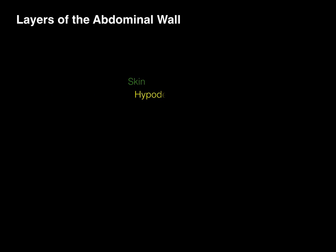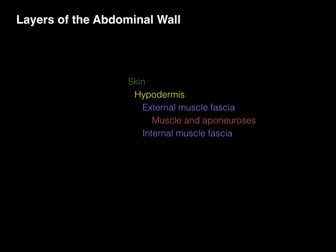Skin, hypodermis, external muscle fascia, muscle and associated aponeuroses, internal muscle fascia, extrasolomic tissue, and finally the solomic sac. Solomic sac is the term used for the mesothelium lining that internal surface of the body cavity.